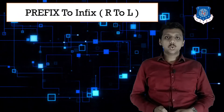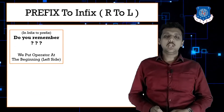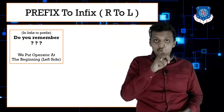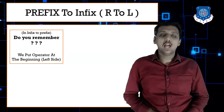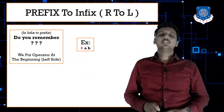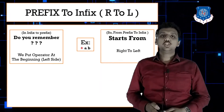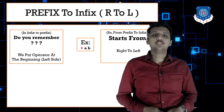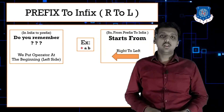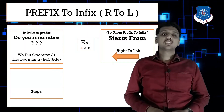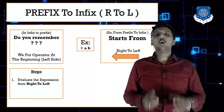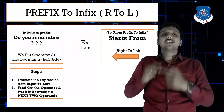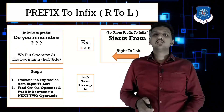Now for prefix to infix conversion: remember that in infix to prefix, the operator is placed at the leftmost side — at the beginning. So to convert prefix to infix, you need to start from right to left. The steps are: find the operator from right to left and then place that operator in between its next two succeeding operands.